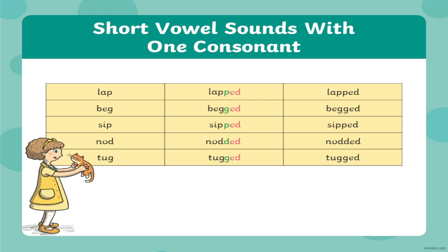Now we have another kind of verb. Again, we have three columns. In the first column, we have these verbs: lap, beg, seat, nod, and talk. When we have short or single-syllable verbs, we duplicate the last letter. As you can see in column two, for example, 'lap' — the 'p' is doubled and we add the suffix '-ed.' The past forms are: lapped, begged, seated, nodded, talked.